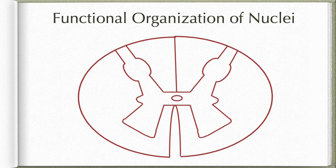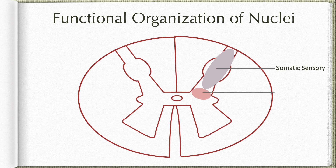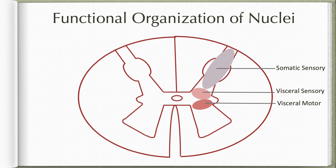The cells in the grey matter are arranged in four functional columns in the case of the spinal cord. The dorsal horn has somatic sensory neurons, that is the general somatic afferent functional column. The intermediate region has visceral sensory and visceral motor neurons, that is general visceral afferent and general visceral efferent columns, present only in the thoracic and upper lumbar as well as second, third and fourth sacral segments. The ventral horn is made up of somatic motor neurons, otherwise called the somatic efferent functional column.